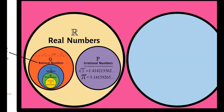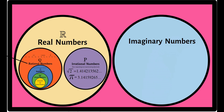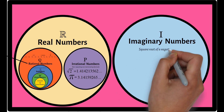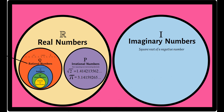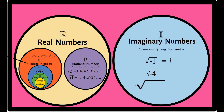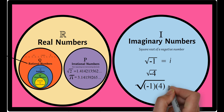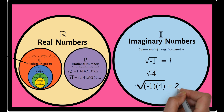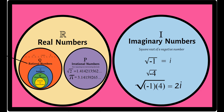Next classification of numbers are imaginary numbers. Imaginary numbers are separated from real numbers and are often denoted as this symbol. Imaginary numbers are square root of negative numbers. Example: square root of negative 1 is i. Another example is square root of negative 4 — pwede natin i-factor ang negative 4 as negative 1 times 4. Square root of 4 is 2 and negative 1 is i, so we get 2i.